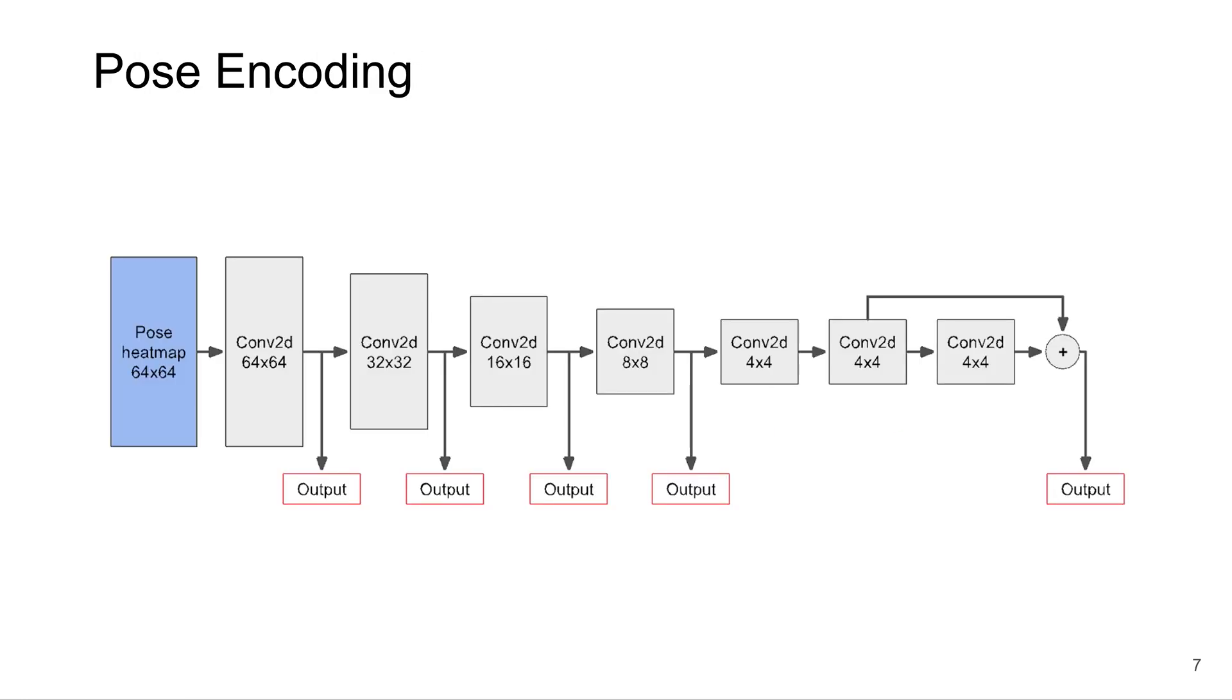We can take a closer look at the pose encoder. It takes a 64 by 64 pose heatmap, which is formed from pose keypoints, and it downsamples using convolutions. We output at multiple resolutions, and these are input to the corresponding style blocks. We use a separate discriminator to train this, and it takes in pose heatmap and image pairs.